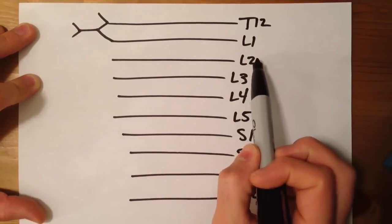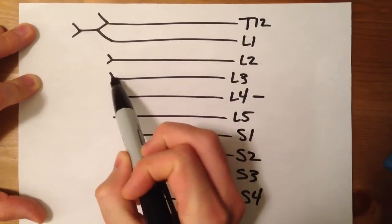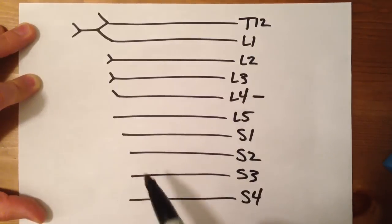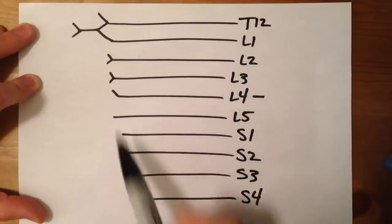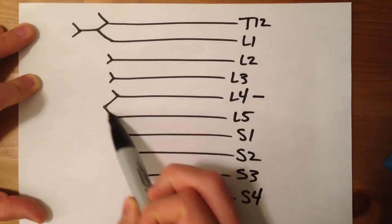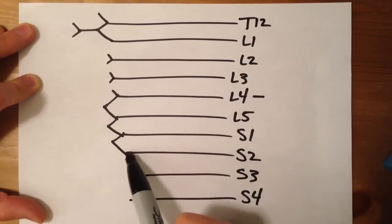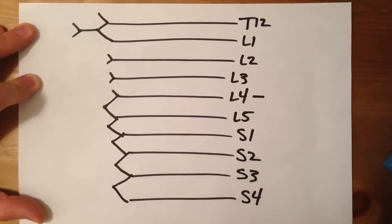And then from L2 to L4, we're going to make these little V projections. From L4 and L5 and down, we're going to connect those to each other, like little mountain peaks.